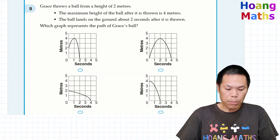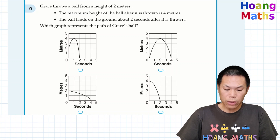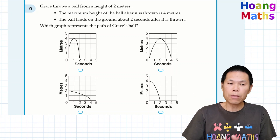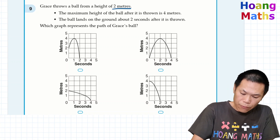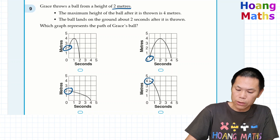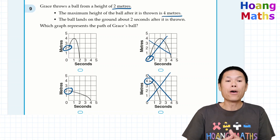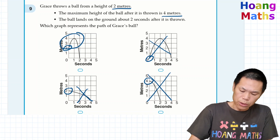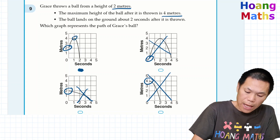Number nine: Grace throws a ball from a height of 2 meters. The maximum height of the ball after it is thrown is 4 meters. The ball lands on the ground about 2 seconds after it is thrown. The graph must start at 2 meters — so we eliminate graphs starting at zero or four meters. The maximum must reach 4 meters, so any graph with a maximum of 2 meters is wrong. The correct answer starts at 2 meters with a maximum height of 4 meters.